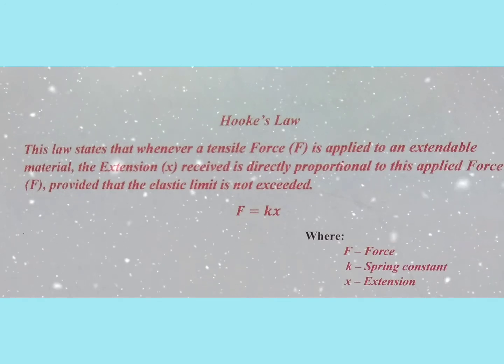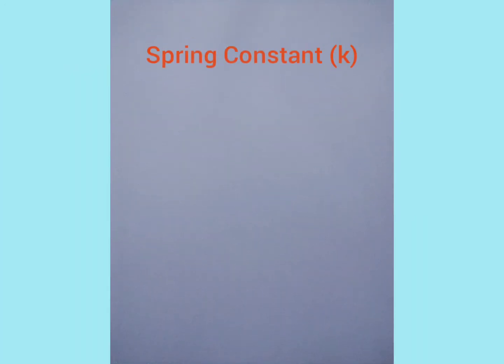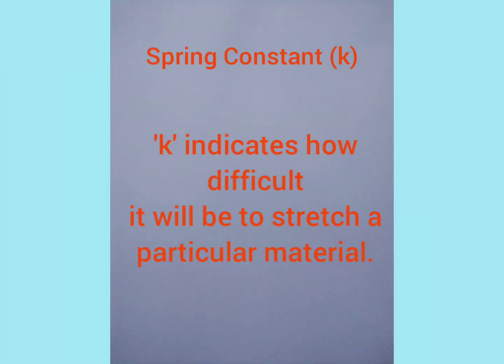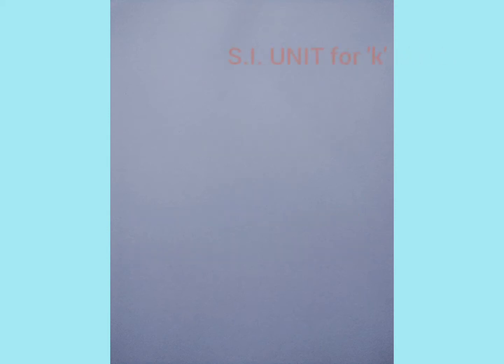The spring constant K is a value that gives an indication of the stiffness of the spring or any other material that is being stretched. That is, the larger the value of the spring constant, the stiffer the spring. The SI unit for the spring constant K is Newton per meter.